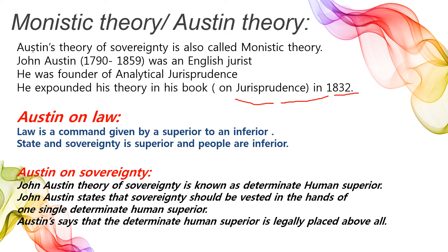Ab dekhte hain, Austin ne law par kya kaha? Law is a command given by a superior to an inferior. Austin kehte hain ki law ek command hai. Kaun de raha hai? Superior, inferior ko. Jo bhi society mein superior person hai, higher level pe, autonomy aur power uske paas hai, wo jo bhi command dega, wo law ho jayega. Aur wo apne inferiors ko command karega.